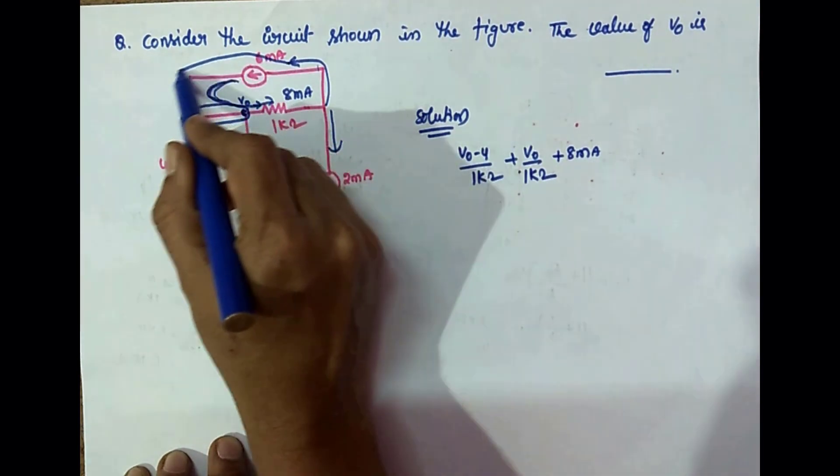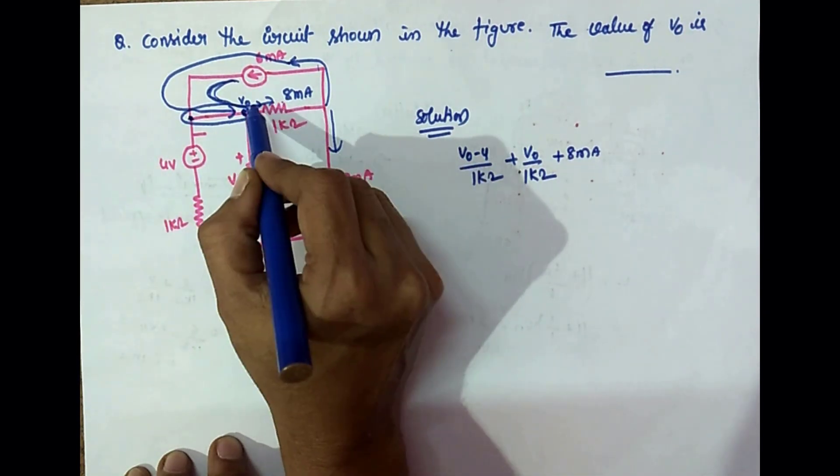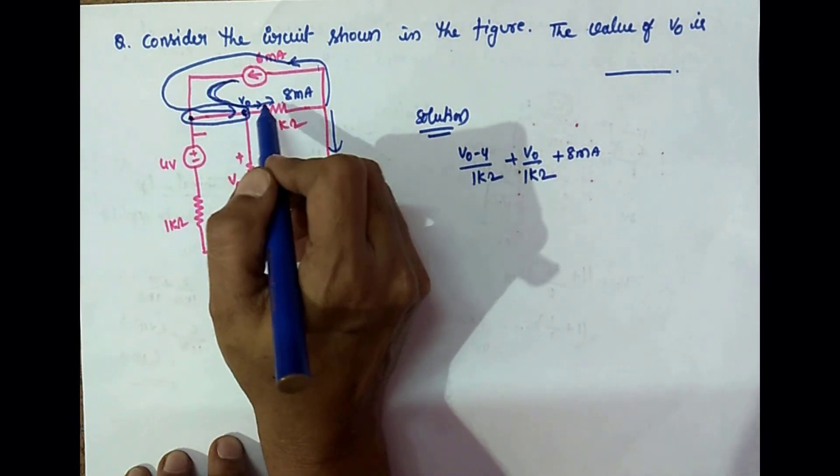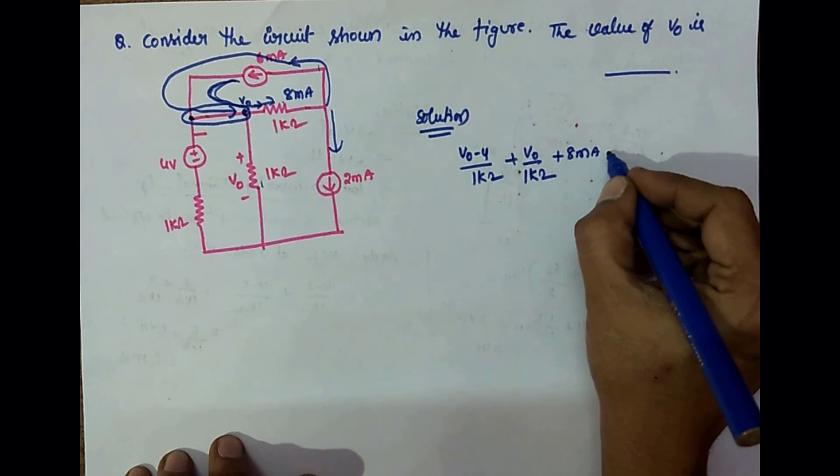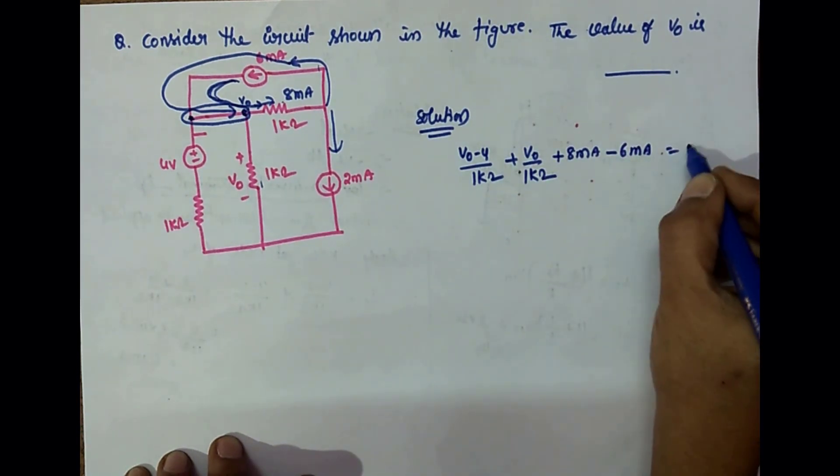So outside this, here 6 mA is coming. From this node, 8 mA is leaving and 6 mA is coming, so it is minus 6 mA. Totally it is zero.